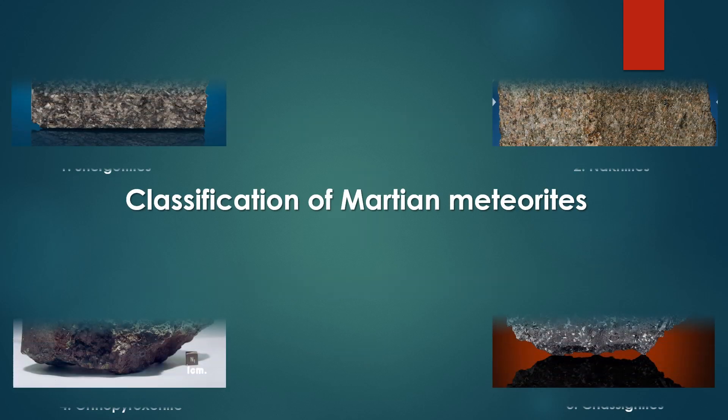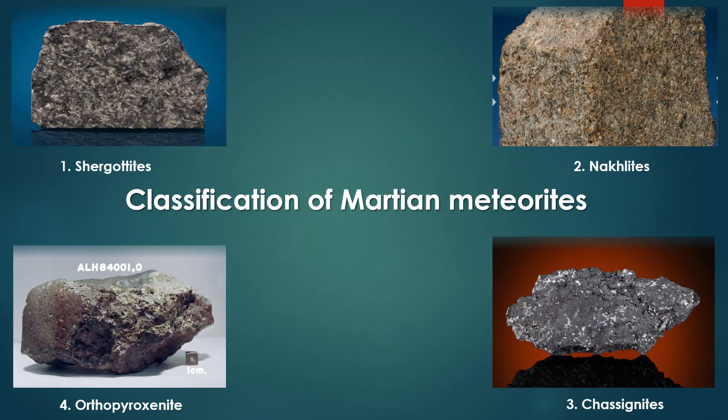Martian meteorites, which are pieces of Mars that were ejected into space and landed on Earth, are classified into several groups based on their mineralogy, chemical composition, and geological origins. These classifications include: 1. Shergottites — characteristics: composed mainly of pyroxene and plagioclase, often converted to maskelynite due to shock.